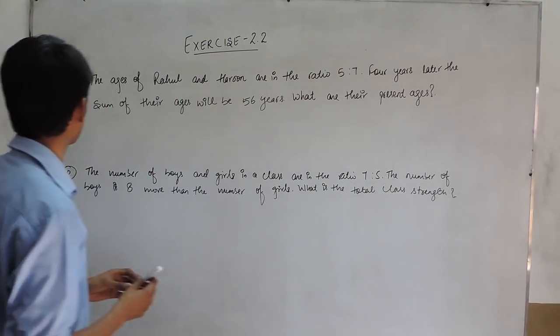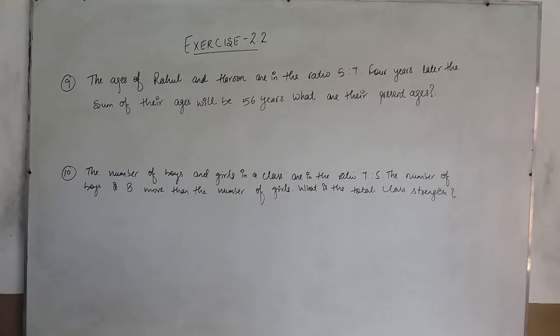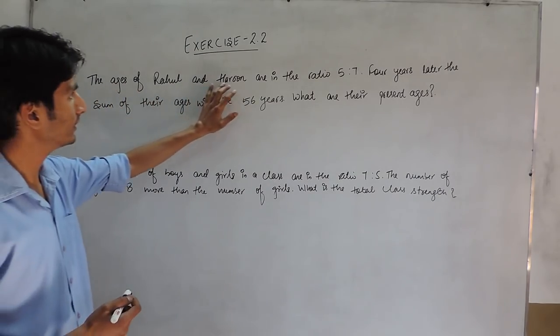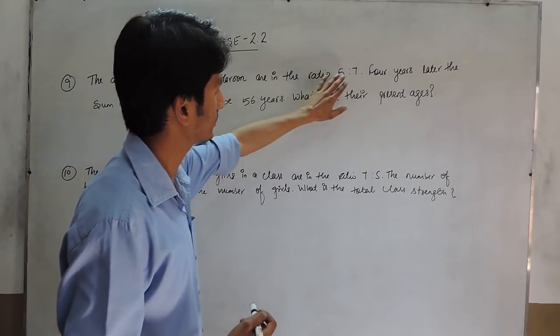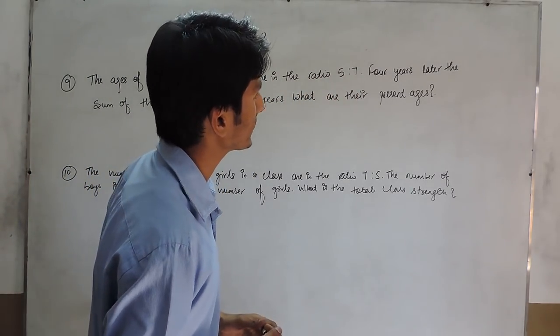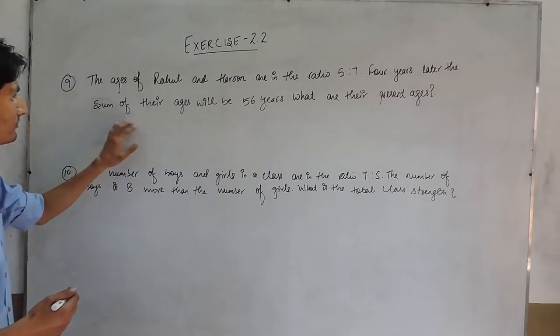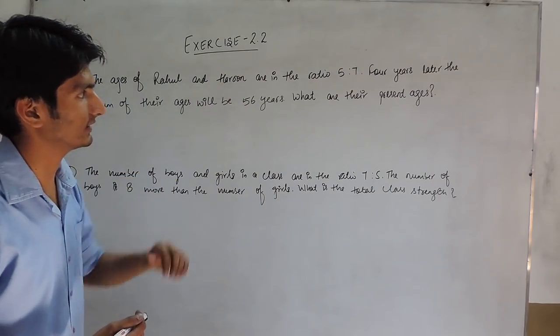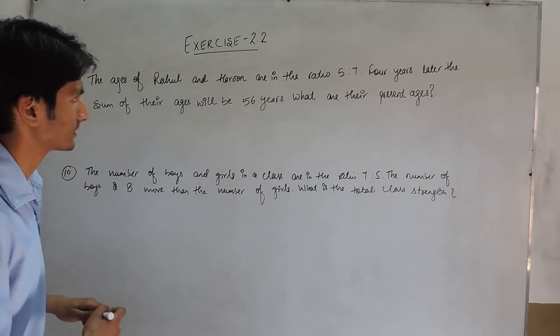Hello, in this video we are going to solve question number 9 and question number 10. In question number 9, it is given the ages of Rahul and Haroon are in the ratio 5:7. Four years later, the sum of their ages will be 56 years. What are their present ages?